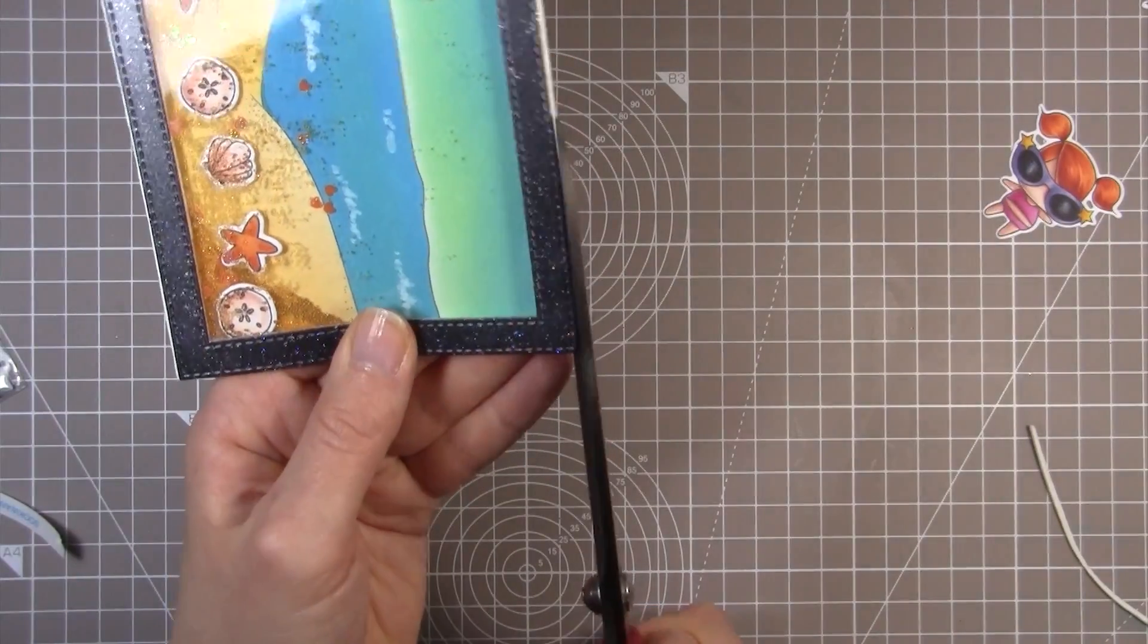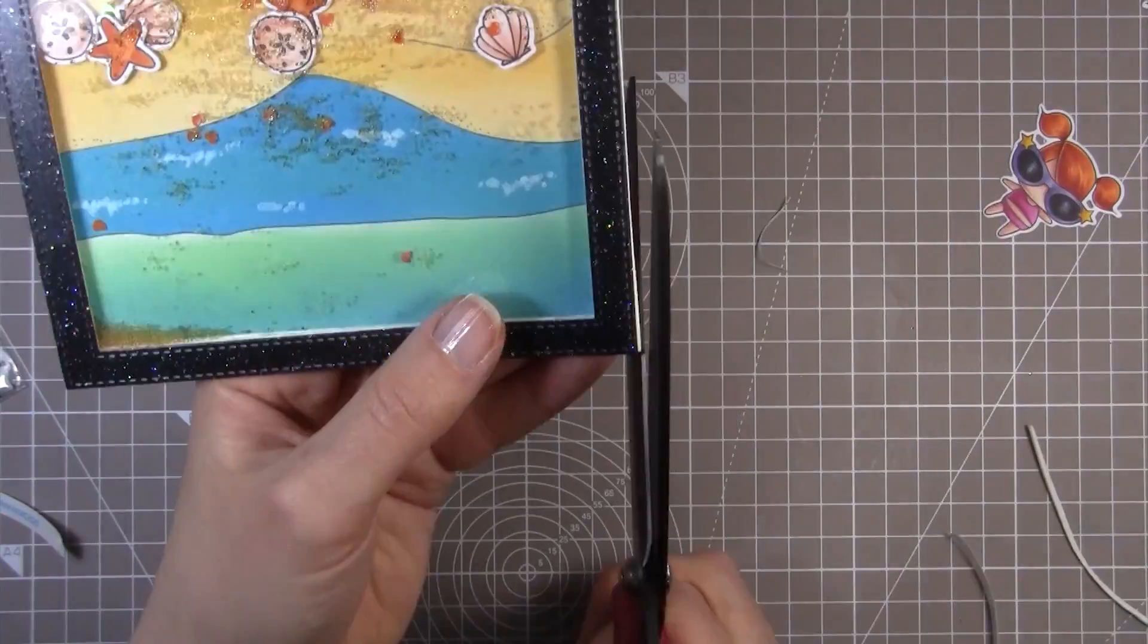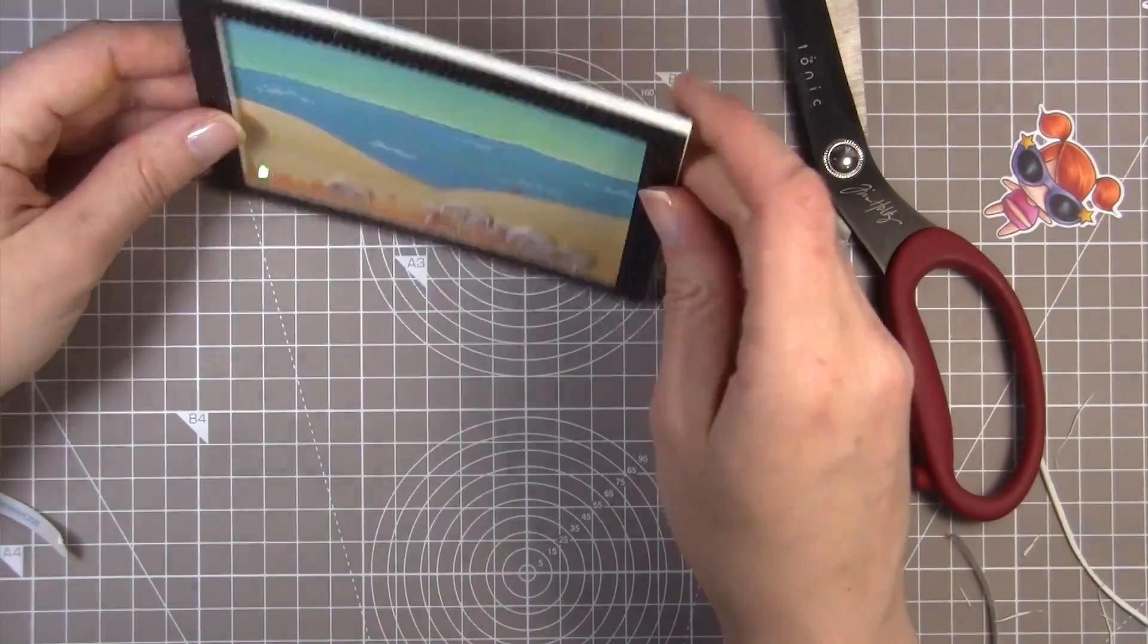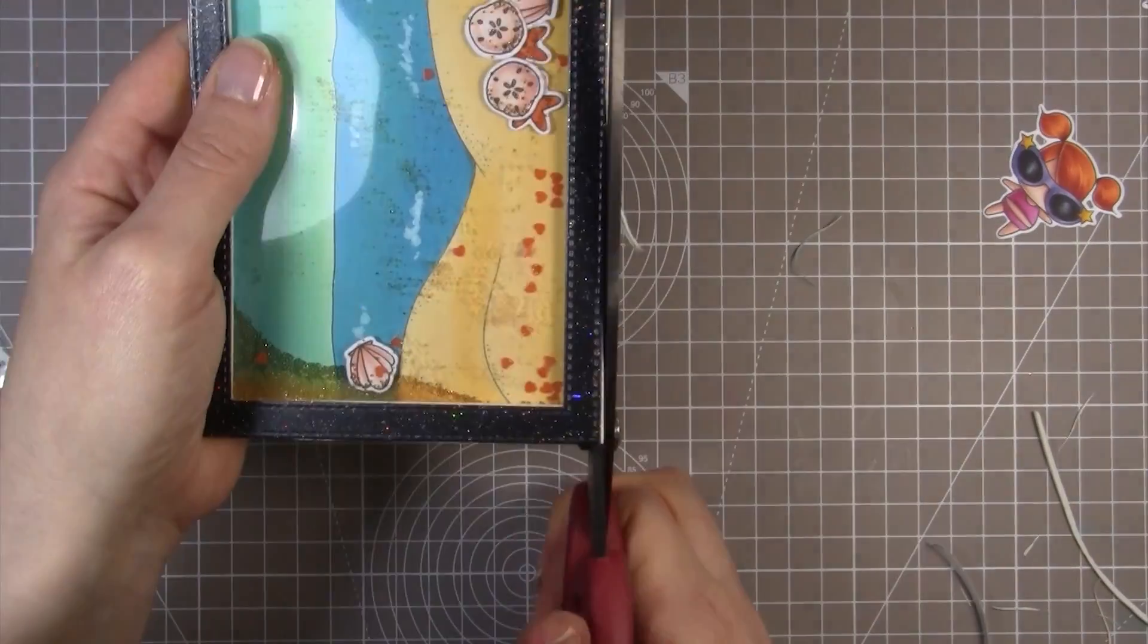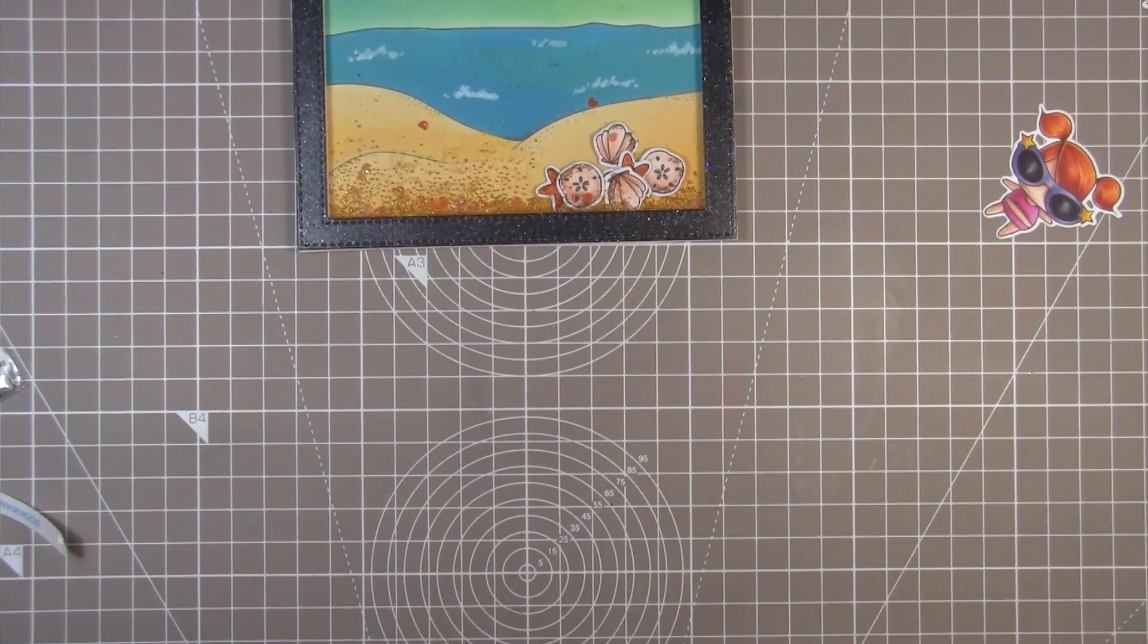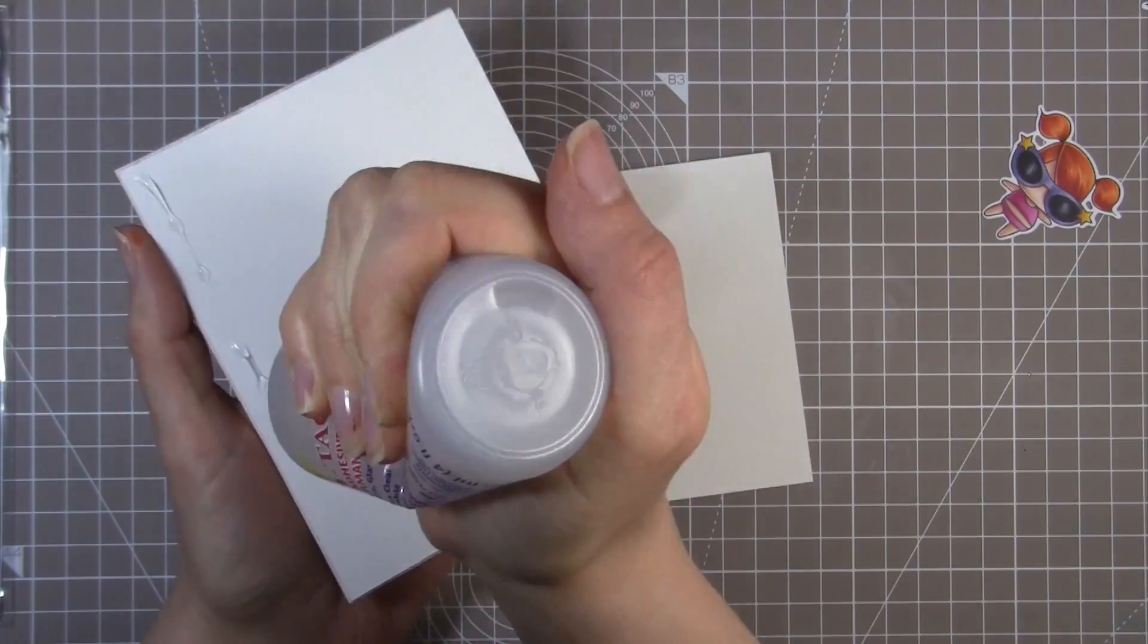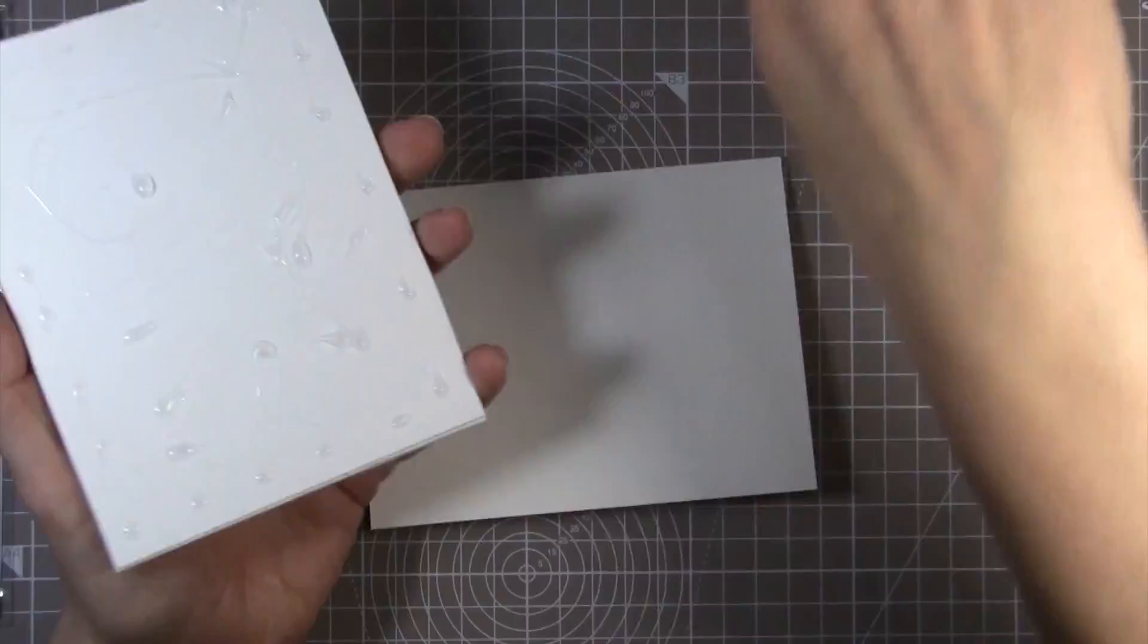As you can see, I'm using my Tim Holtz scissors from Tonic to cut off the excess fun foam that's peeking out from behind. This is what I was talking about with the fun foam, where it kind of flattens out a little bit when you die cut it because of the pressure from the die cutting machine. Even though it does kind of pop back slightly, it seems not too fully, even though I left it for ages. I just trimmed off the excess so that it wasn't visible from behind the black frame. Now with the shaker element all assembled, I'm using my Fabri-Tac glue to adhere that to a card base.